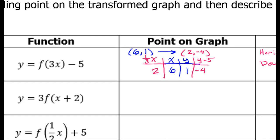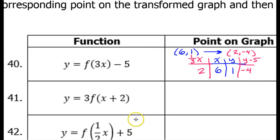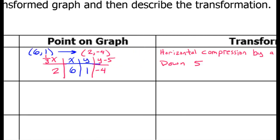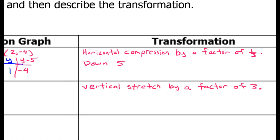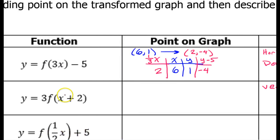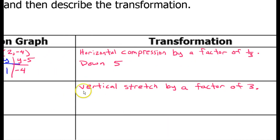Let's take a look at number 41. The 3 in the front is going to be a vertical stretch by a factor of 3. Having a 2 on the inside is going to be a shift to the left 2 — everything is the opposite of what it looks like on the inside. So plus 2 you might think is to the right, but it's actually to the left. So let's add left 2 to the list.